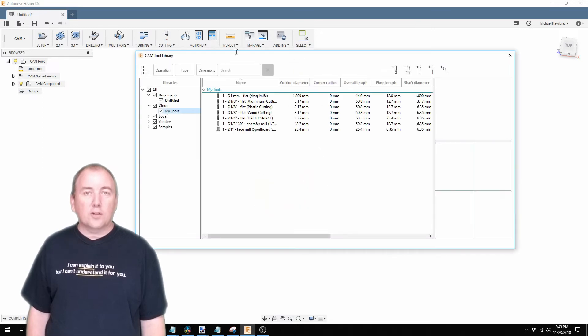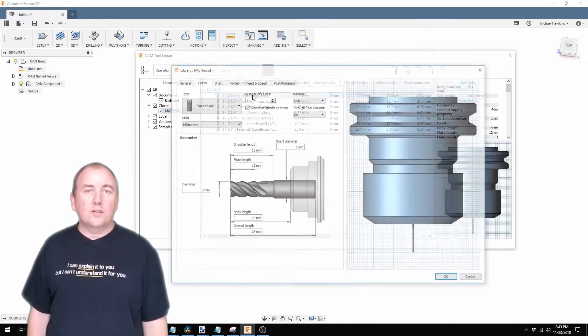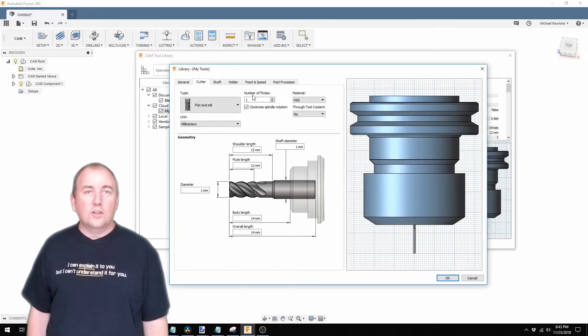My first step in the CAM workspace was to define a tool for the drag knife. When Fusion generates a gcode it needs to know the dimensions of the router bit the CNC will be using to make the cuts. This allows Fusion to calculate the correct path based on the size of the bit since the bit normally will be removing some amount of material.